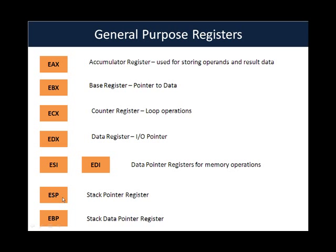ESP is the stack pointer register — ESP always points to the top of the stack. If you don't know what the stack is, we will deal with that in the next couple of slides. EBP is the stack data pointer register. Don't get worried if at this point you don't understand exactly what all this means or how this is going to be used in assembly language. I just mentioned what the registers are for, for the sake of completeness. When we actually get into the programming, you will understand how these are used in order to write code.